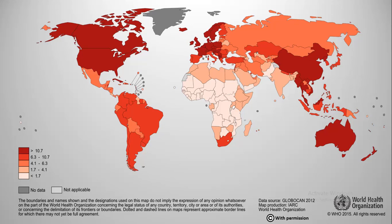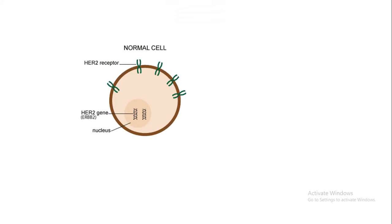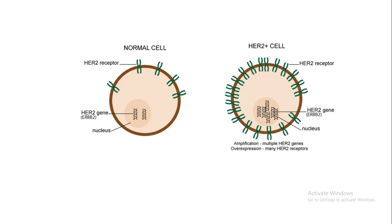Normal breast cells, for their normal growth, development, and division, have a receptor known as the human epidermal growth factor receptor, or HER. HER has different family members: HER1, HER2, HER3, etc. HER2 receptors are present on normal cells — about 20,000 in number on a normal breast cell. But in the case of HER2-positive breast cancer, the number of HER2 receptors on the cell surface increases dramatically. This cancer can also occur due to a duplication in the HER2 gene, which is ERBB2.